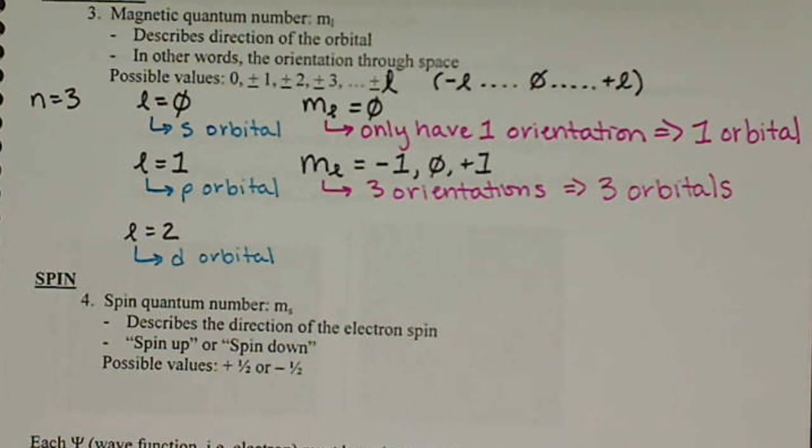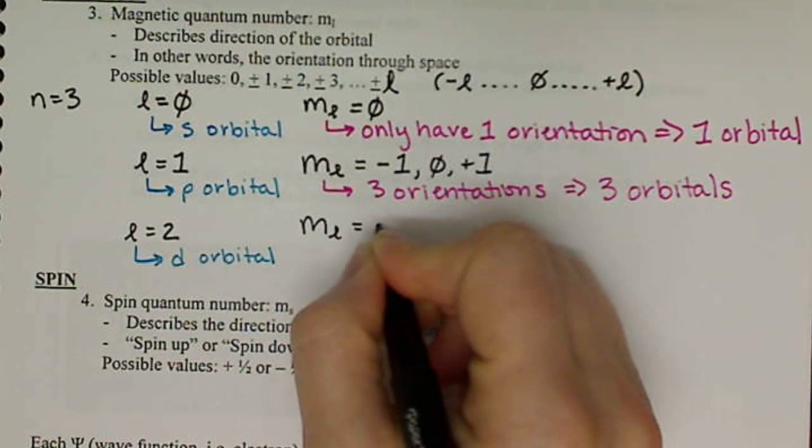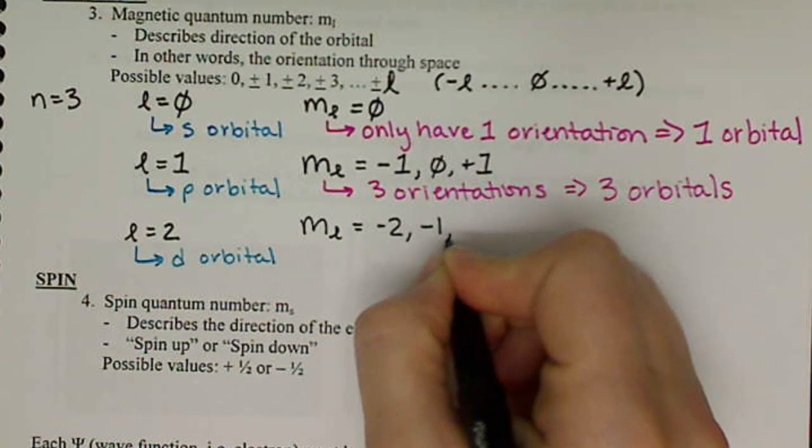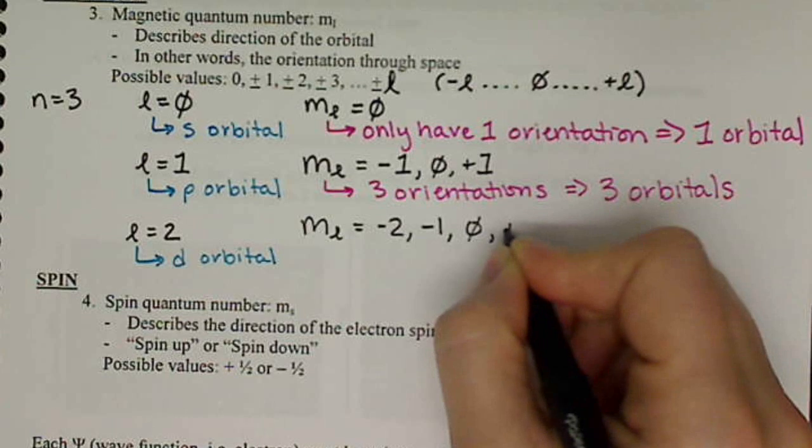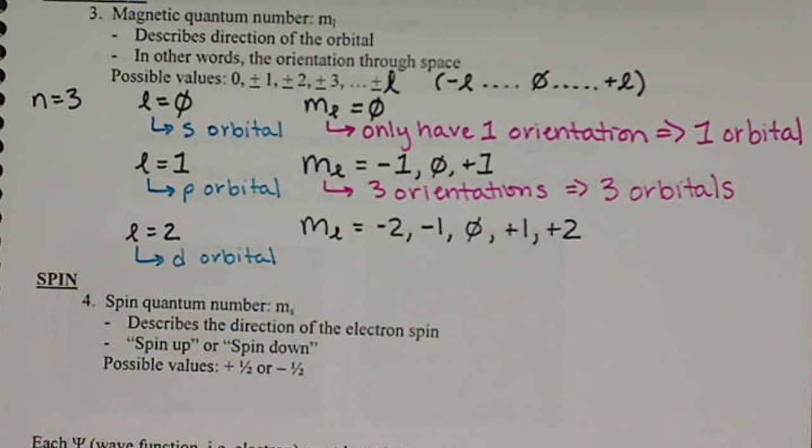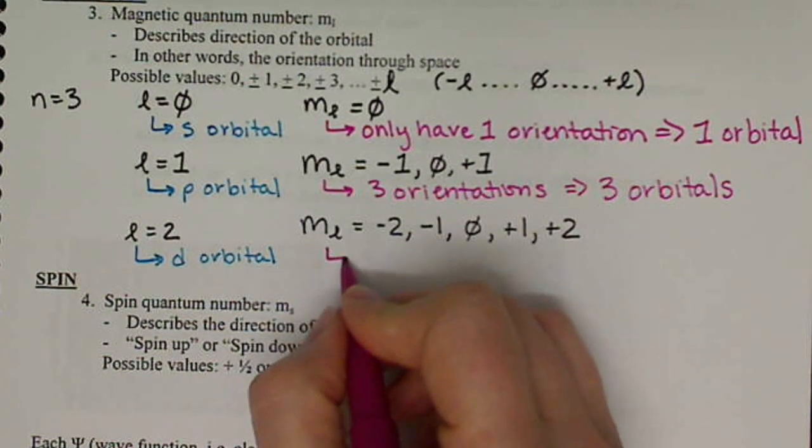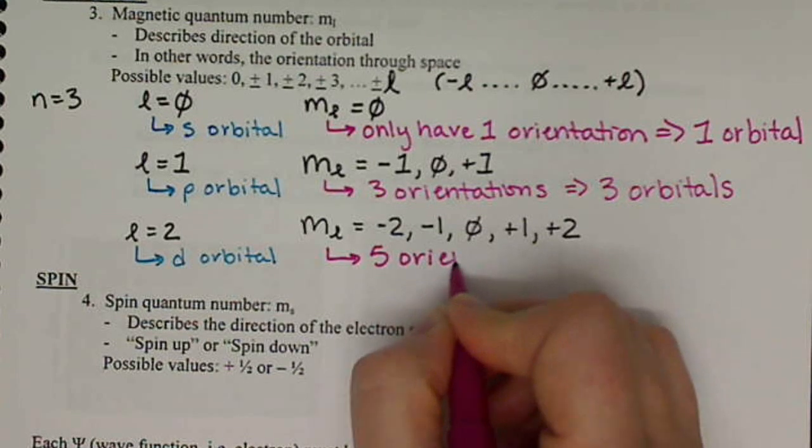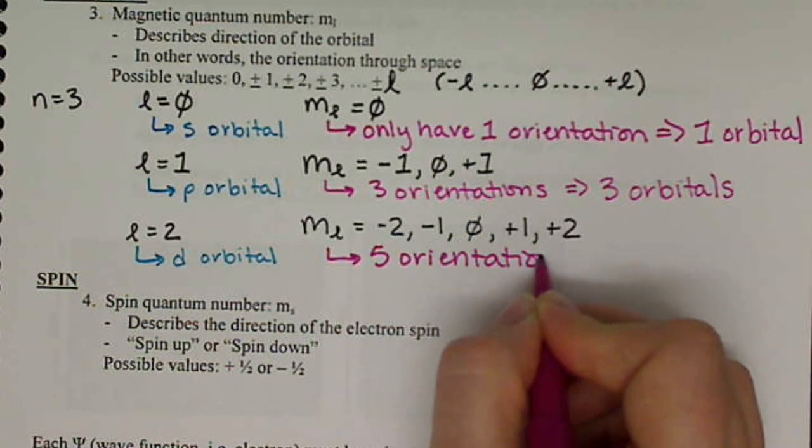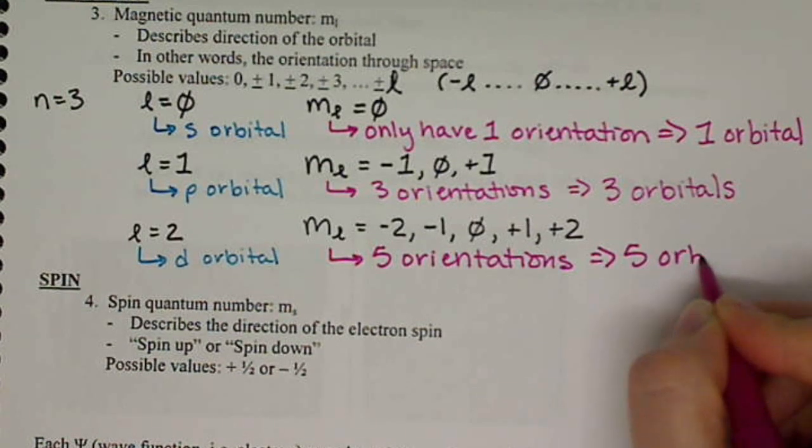So when l equals two, we have our d orbital. M sub l can be negative two, negative one, zero, positive one, and positive two. So we have one, two, three, four, five different orientations, which means we have five orbitals.